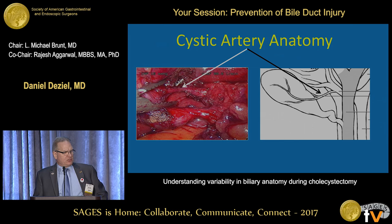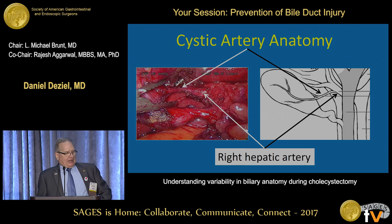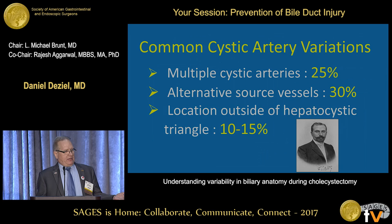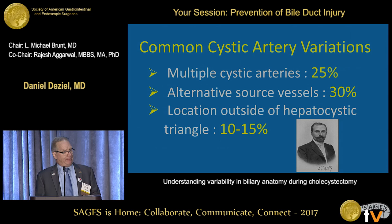The cystic artery is single about 75% of the time. It divides into a superficial (inferior) and a deep (superior) branch. It comes from the right hepatic artery about 70% of the time, and the right hepatic artery goes behind the common duct about 85% of the time. This means we have anatomic diversity: one out of four people has multiple cystic arteries; one out of three people, the cystic artery comes from somewhere other than the right hepatic artery; and in one out of ten people, there is no cystic artery in the hepatocystic triangle.